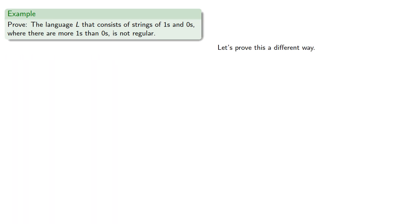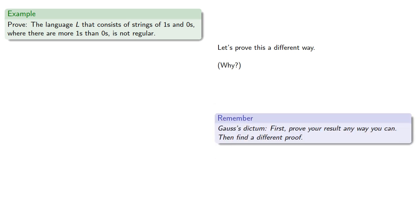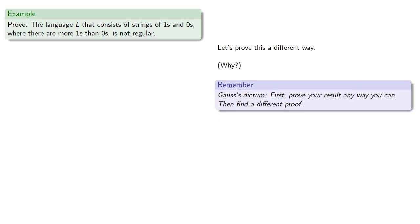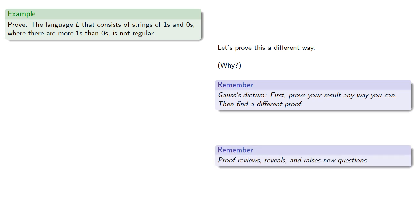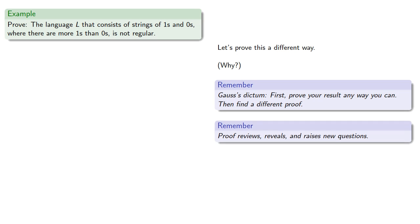But let's prove our result a different way. There are several reasons — first, there's Gauss's dictum: first prove your result any way you can, then find a different proof. Remember, the purpose of proof is that proof reveals and raises new questions. And, well, it's better than doomscrolling.